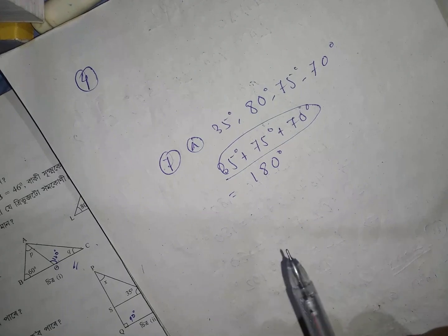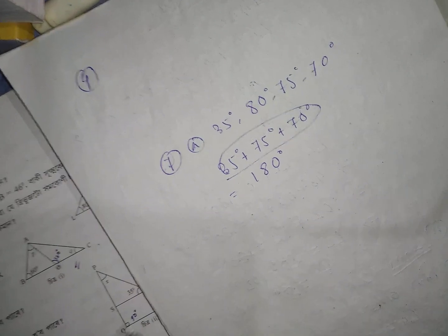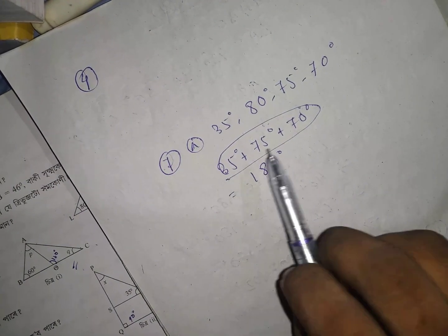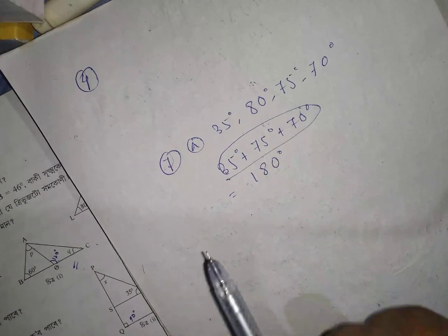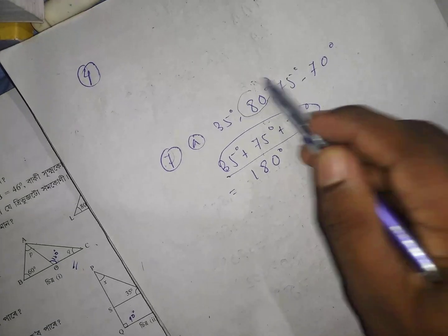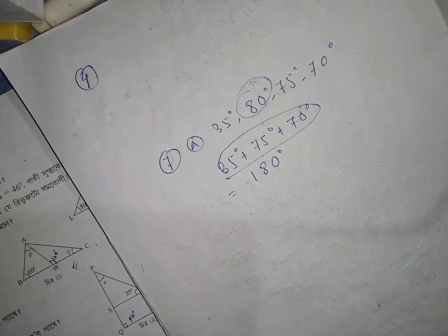This is 35 degrees and 80 degrees, and 70 degrees.